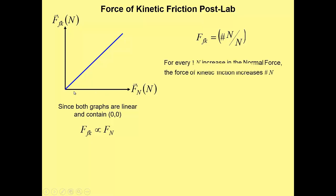So for every one newton in normal force, we get whatever your slope was newtons of kinetic friction. For every one newton increase in the normal force, the force of kinetic friction increases by that many newtons. It's telling you how much friction increases when you increase the normal force.